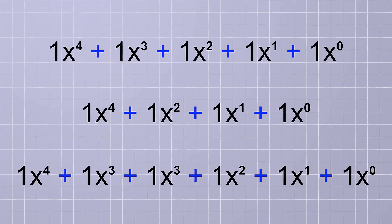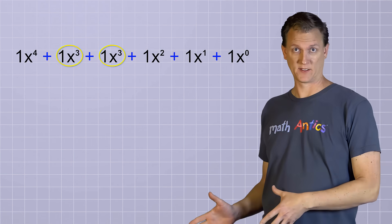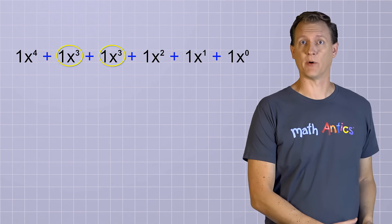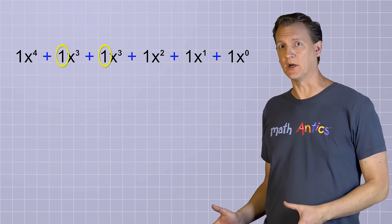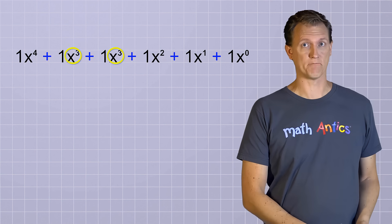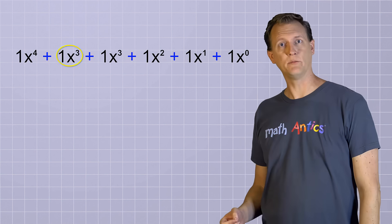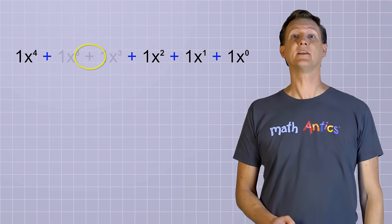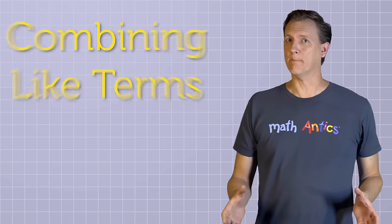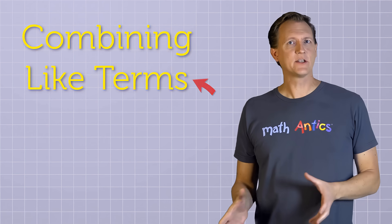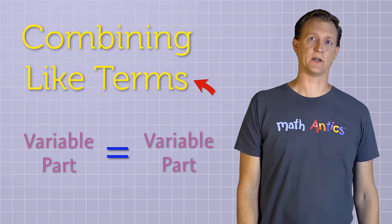So this polynomial has no x cubed term, which is fine, and this polynomial has just one x cubed term, which is fine, but this polynomial has two x cubed terms, which is also fine, but it's more complicated than it needs to be. And whenever you have terms like this, terms that have the exact same variable part, they can be combined into a single term. To do that, you just add the number parts and you keep the variable part the same. So, 1x cubed plus 1x cubed combine to form 2x cubed. What we just did there is called combining like terms. Like terms are terms that have exactly the same variable part.